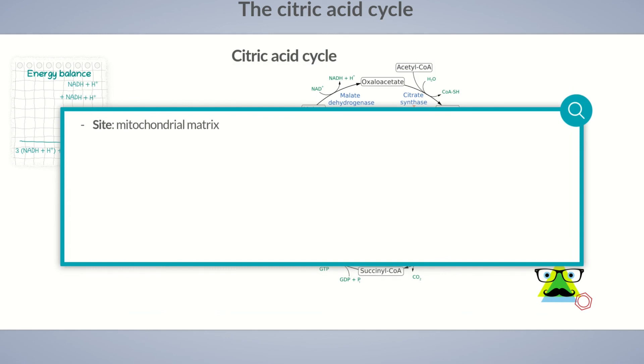The citric acid cycle is the central metabolic pathway that occurs in the mitochondrial matrix. Cleavage of the C2 unit of acetyl-CoA into two molecules of carbon dioxide occurs through oxidative decarboxylation in the first four reaction steps of the citric acid cycle.